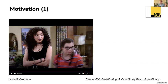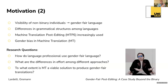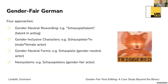We see nowadays many non-binary individuals in TV series, and the conception of what gender means for languages is constantly evolving. There are differences in the grammatical structure of languages, and in translation studies we are starting to increasingly use machine translation and therefore post-editing. But we know that machine translation outputs are biased. So my questions were: how do language professionals use gender fair language? Are there differences in effort among different approaches? And can machine translation be a viable solution to produce gender fair translations and possibly gender fair datasets to then debias machine translation?